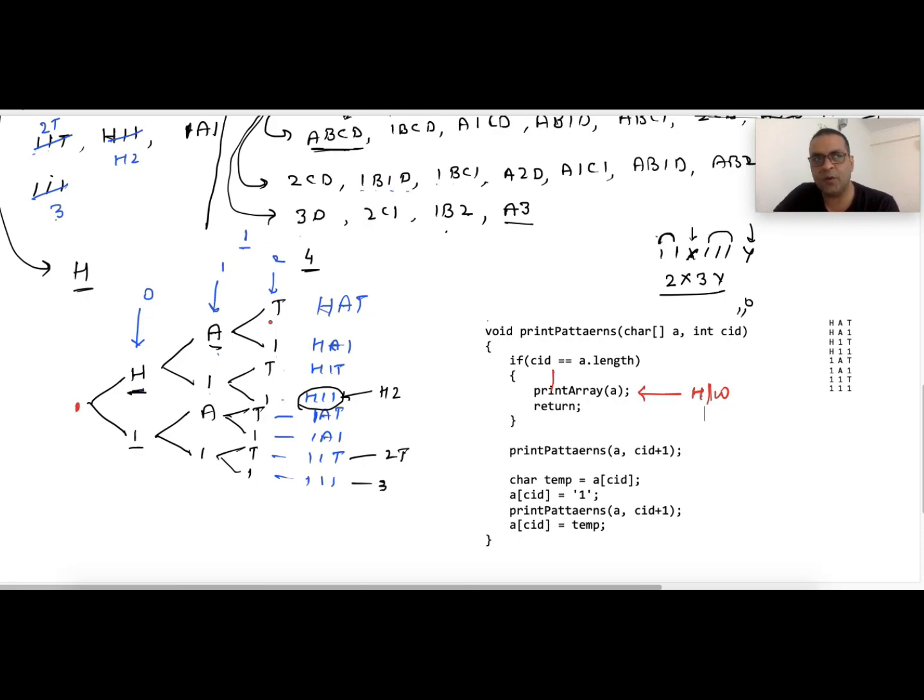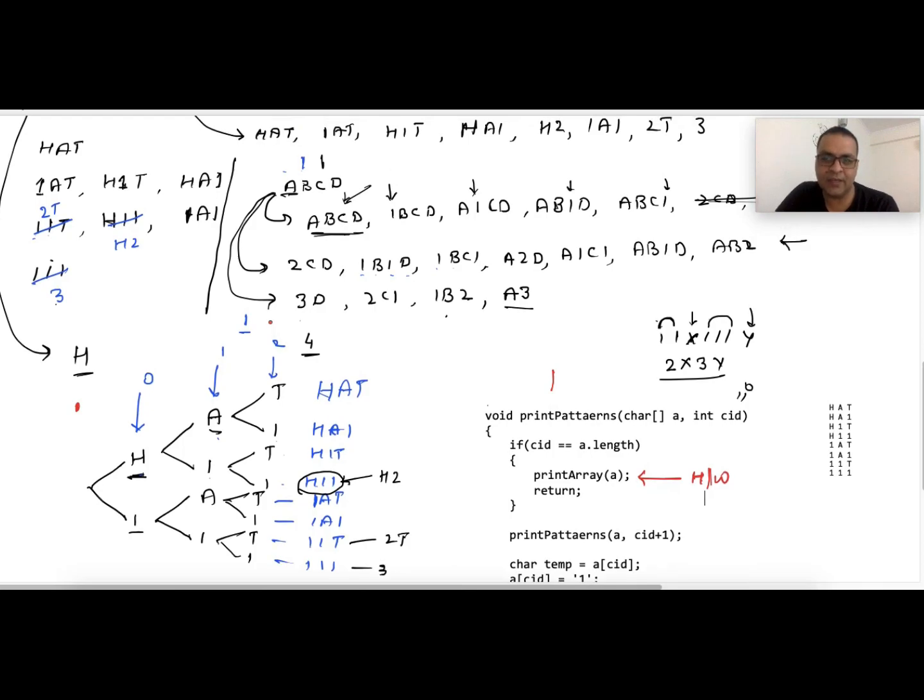When I say out of the box, this is a string problem. So if you start thinking in the box, then you will only think about string algorithms. You will not think about binary algorithms because binary tree is actually out of the box of string.